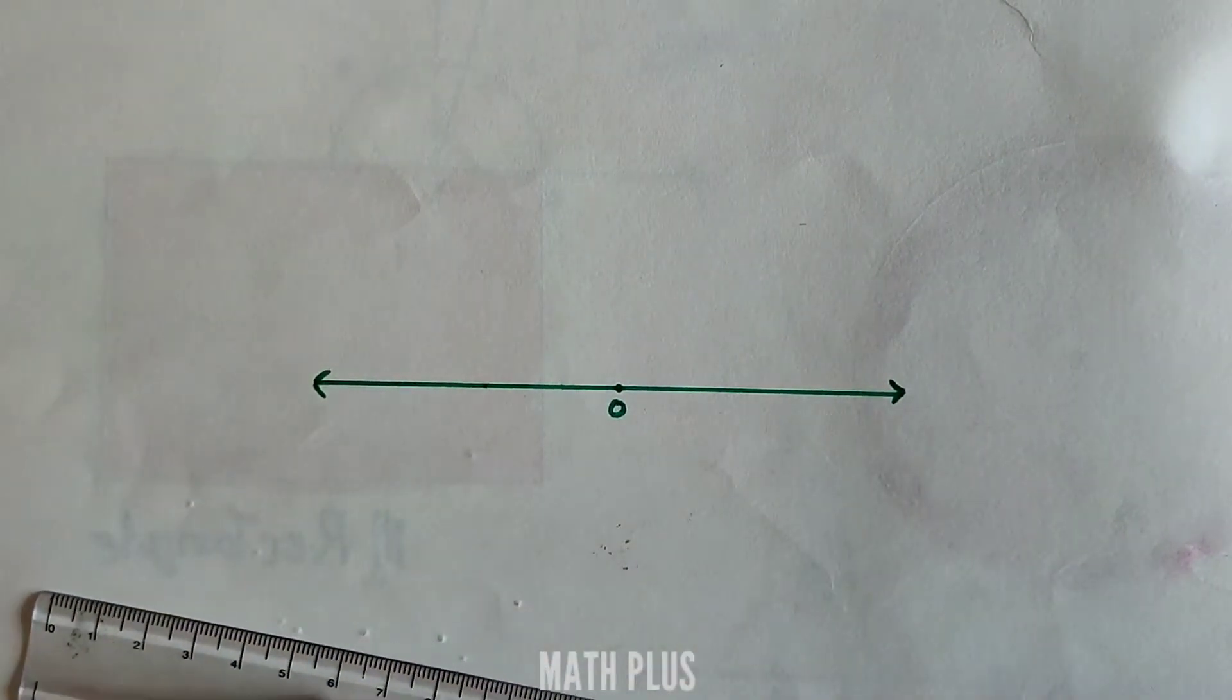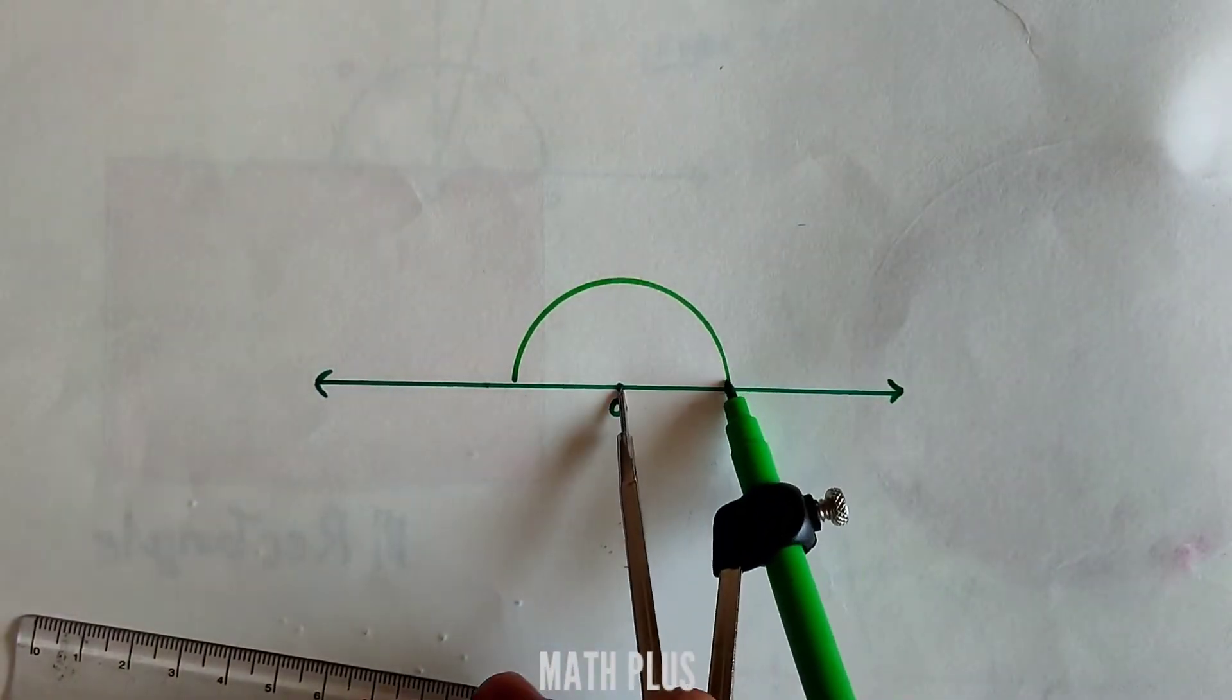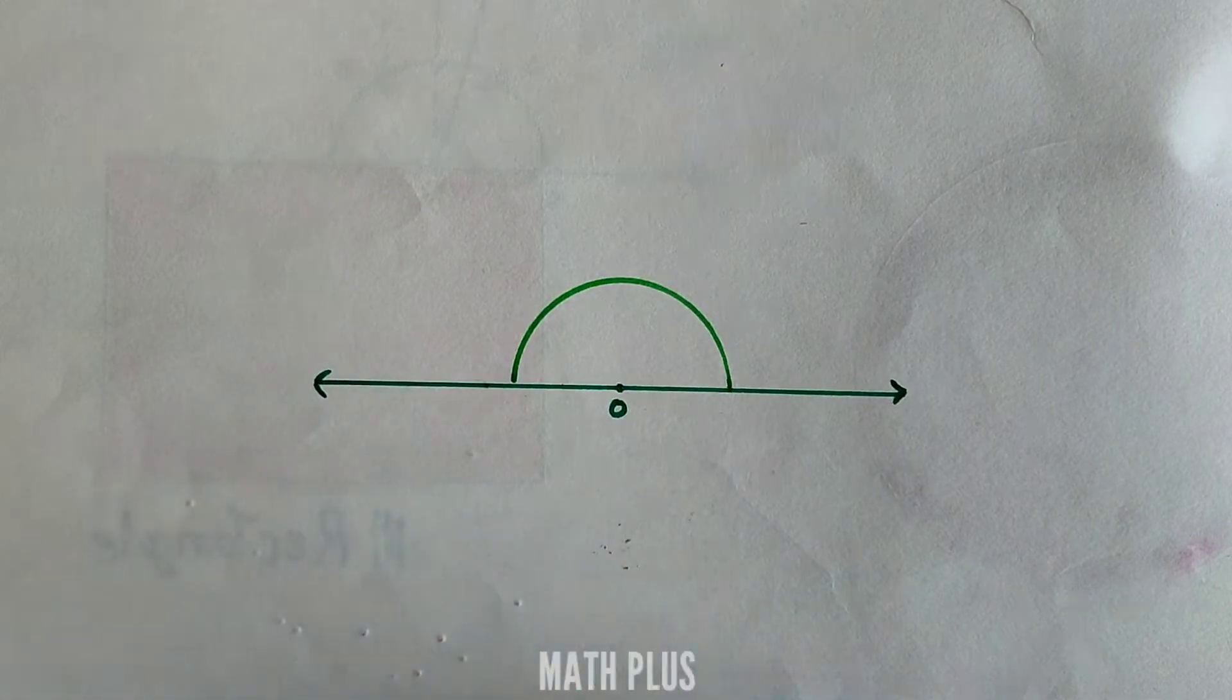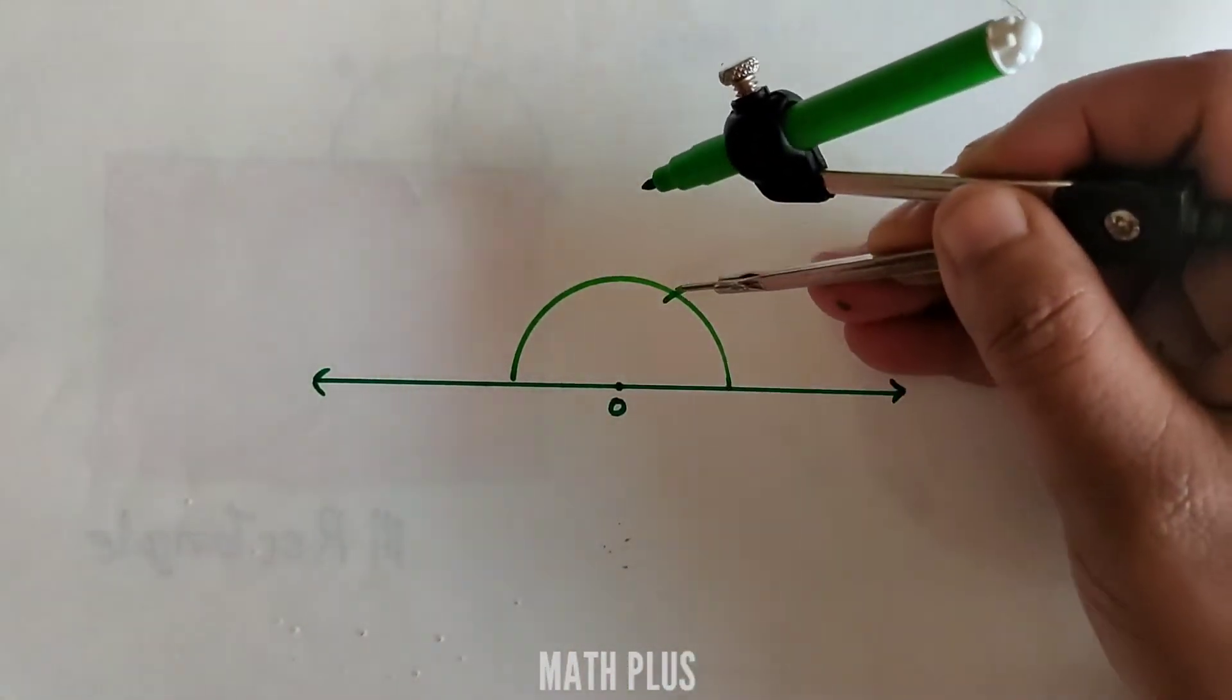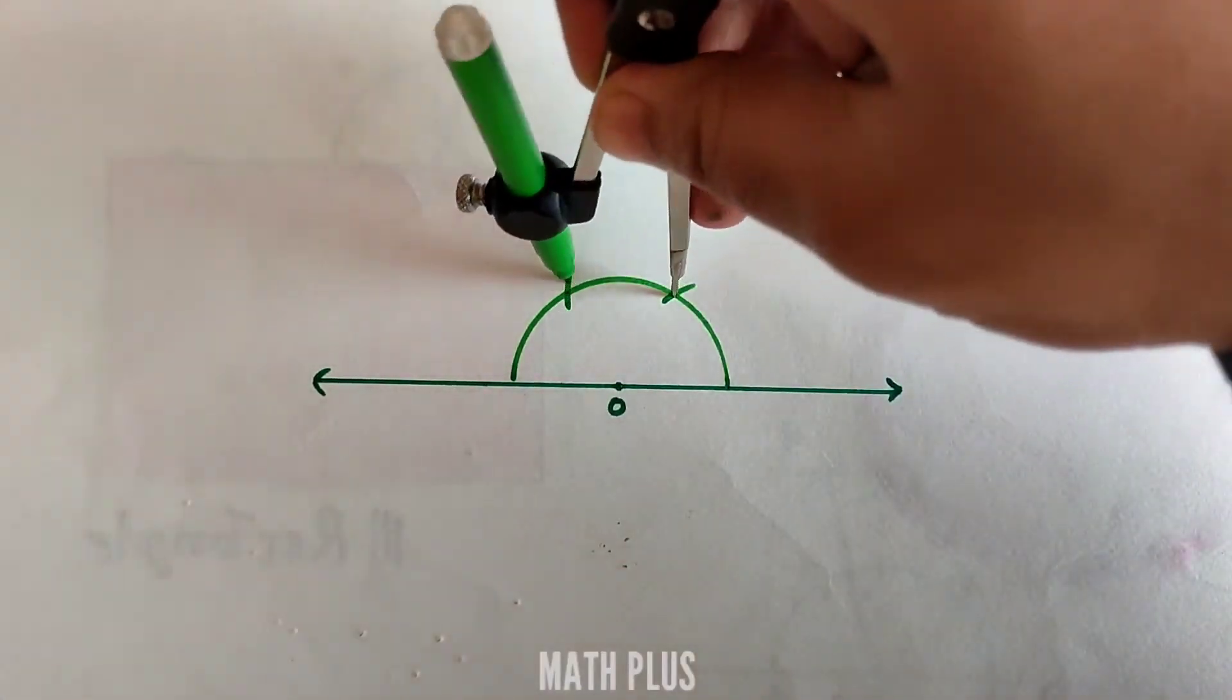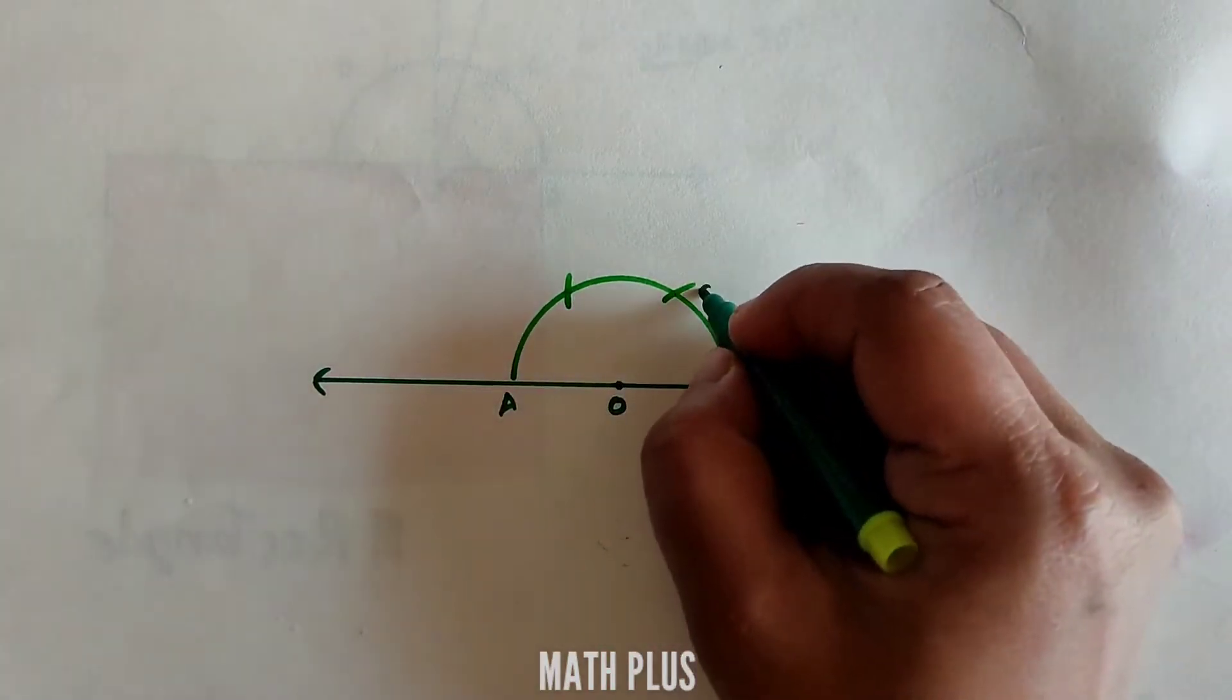Keeping your compass with any radius at point O, draw a semicircle above the line. Using the same radius, mark an arc on the semicircle. Mark another arc on the semicircle. Here you get two angles.